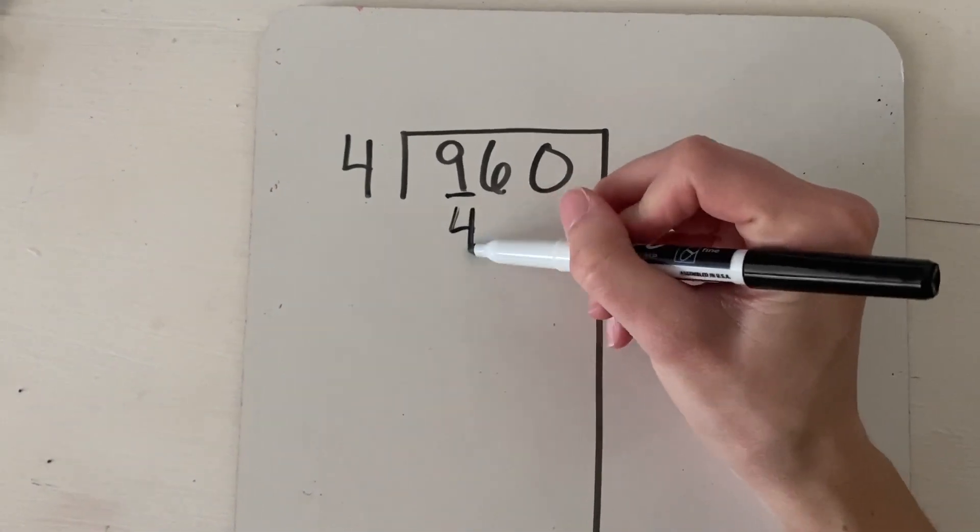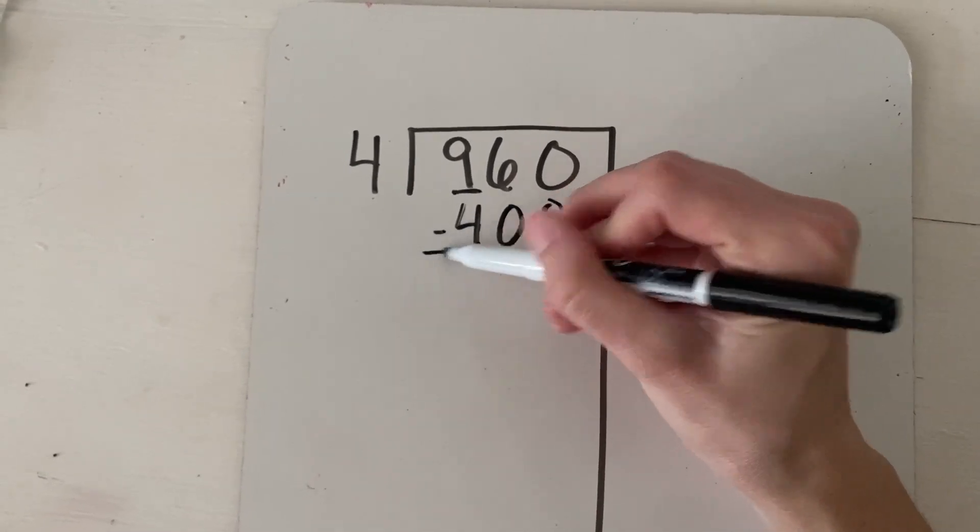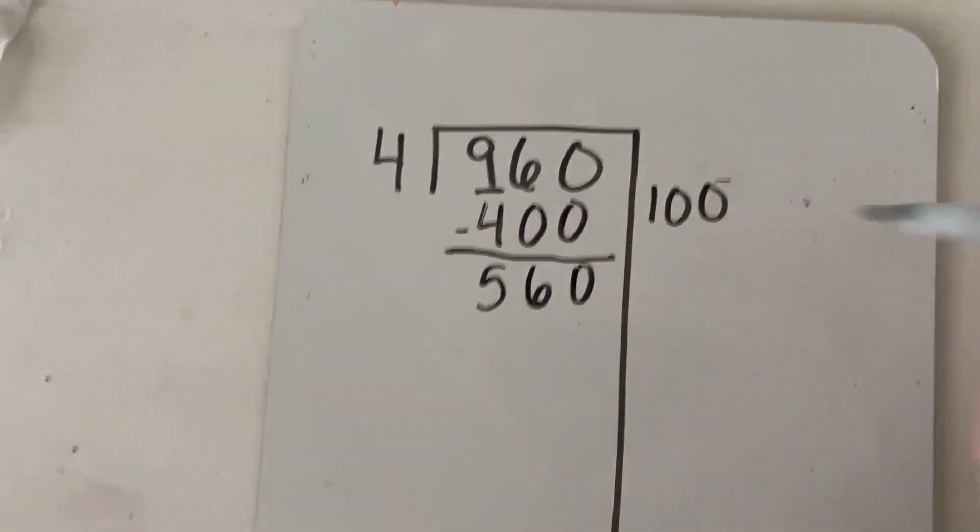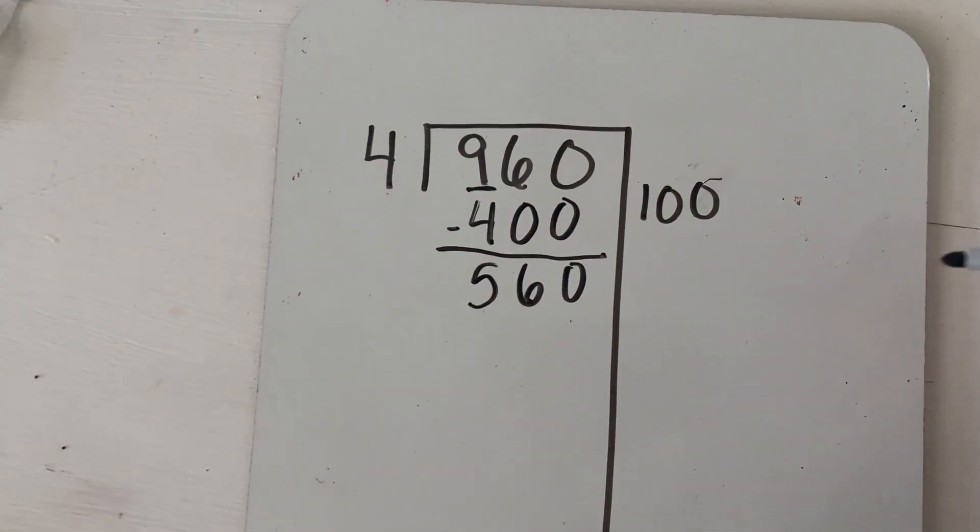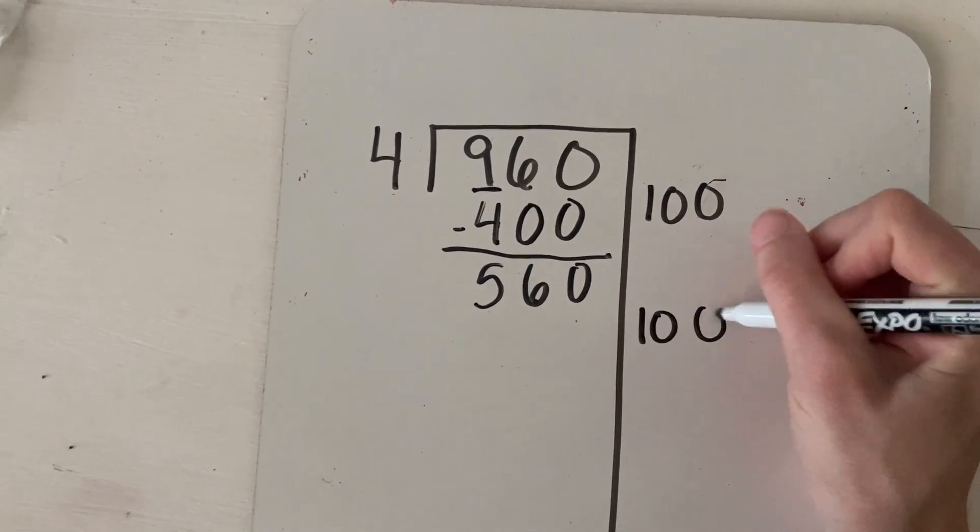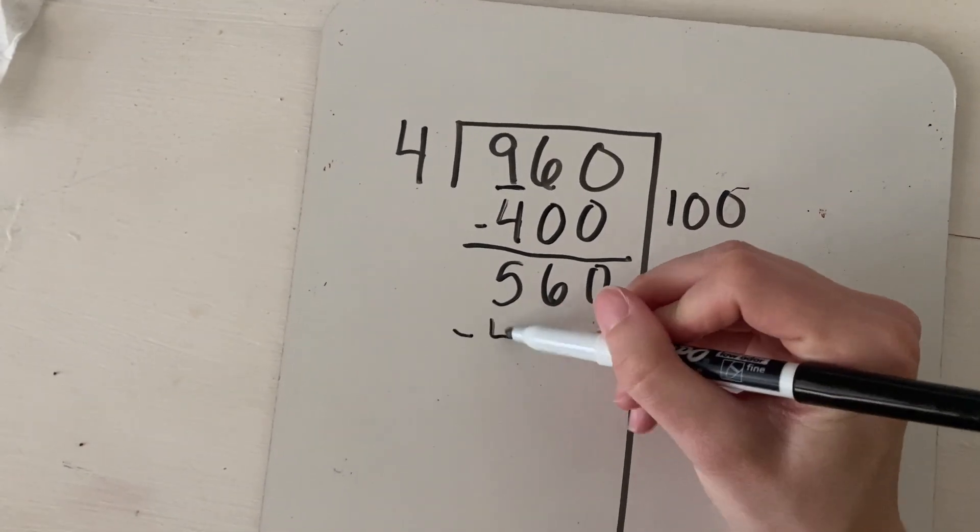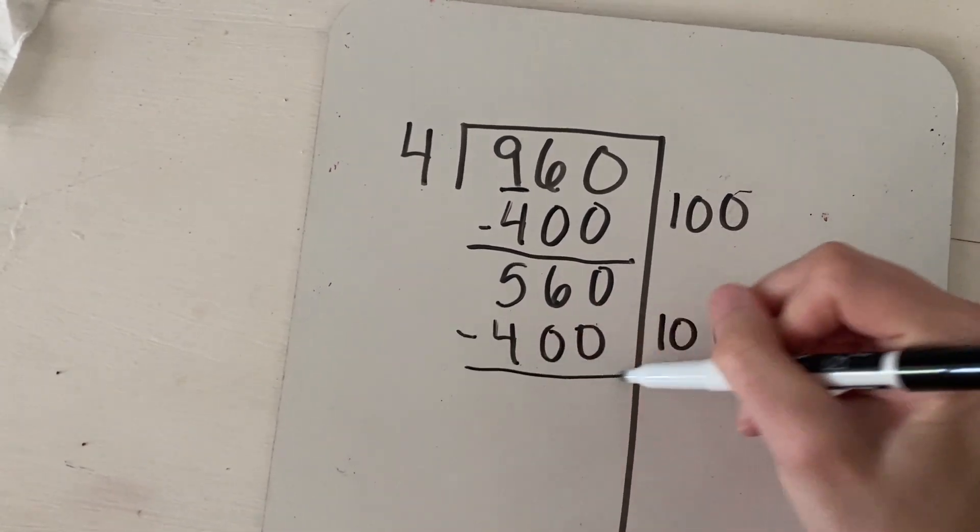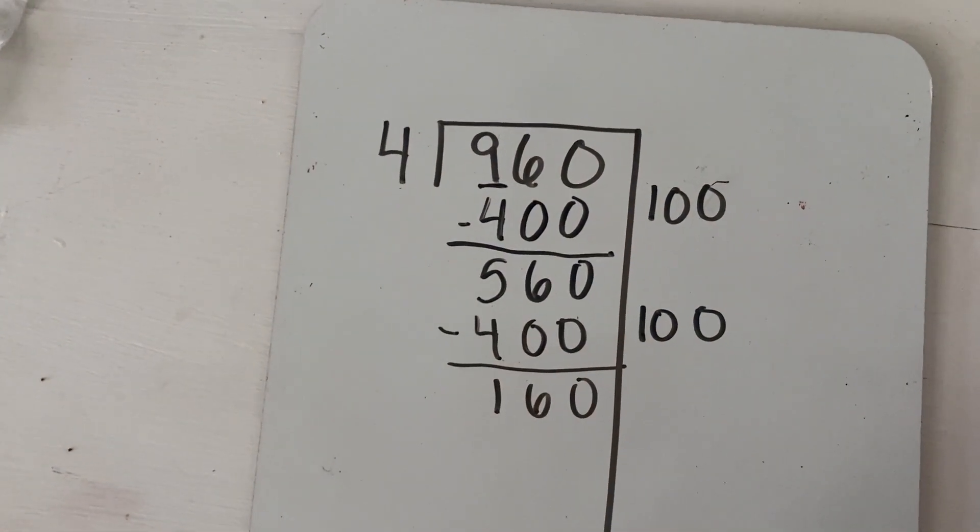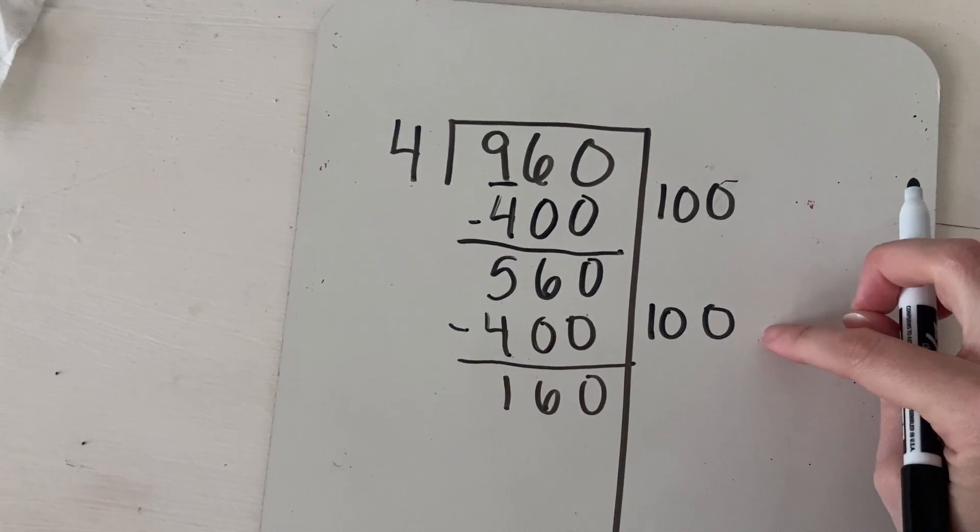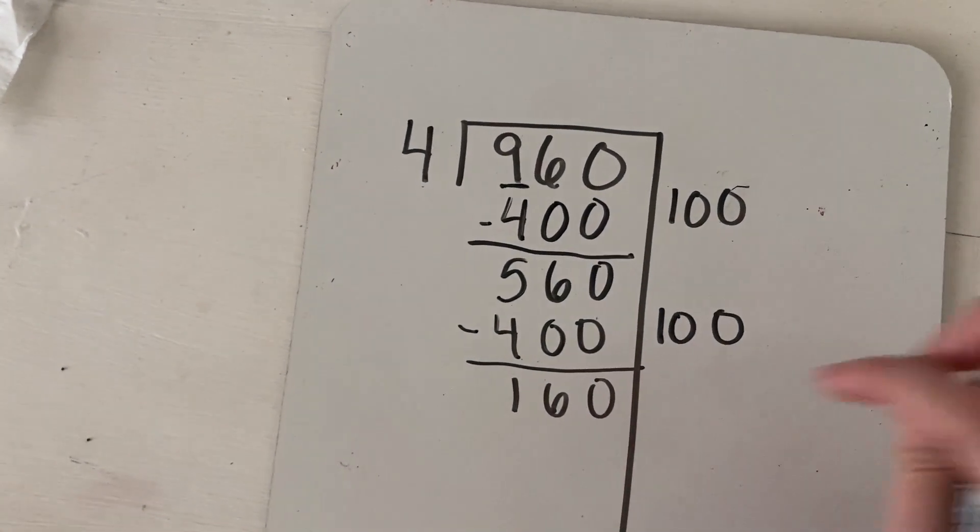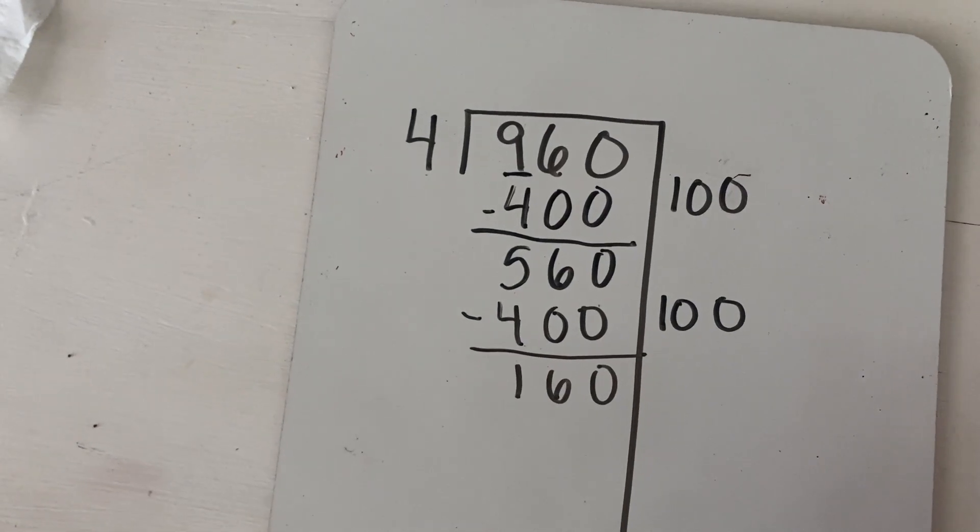So I would subtract 400 and I would end up with 560. And I know that 400 is less than this number. So I can go ahead and do that guess again. And then I would have 160 left over. So now I can't do another four times 100 because 400 would be way more than what I have left. But I can think about what other facts I know.